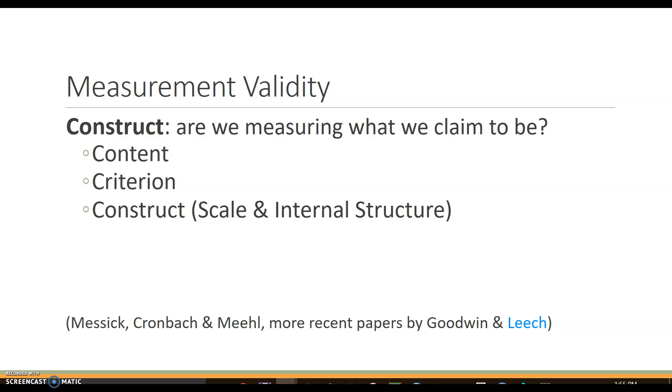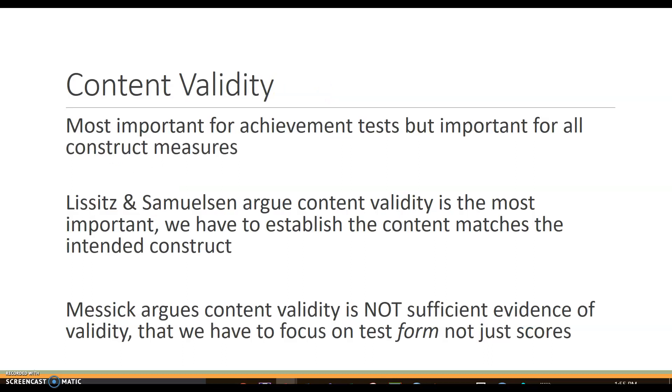Are we measuring what we claim to be measuring? And there's three larger aspects underneath that: content, criterion, and construct. So content validity is really thinking about the items and the content of the items. Are they measuring the content that you think that they are? Lissitz and Samuelsen say that content is the most important.